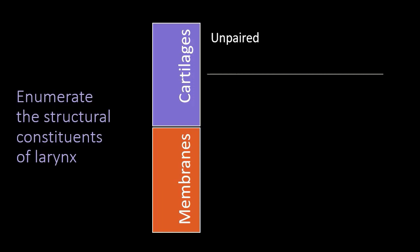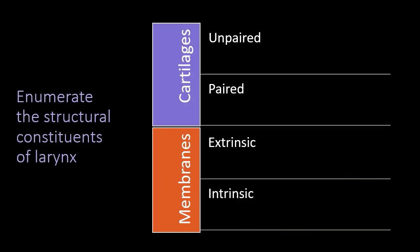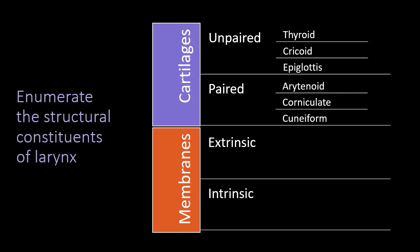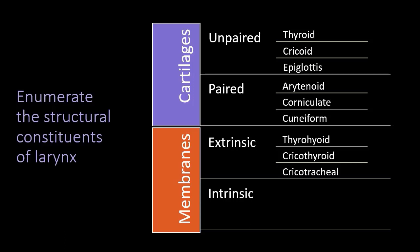Cartilages are of two types — unpaired and paired. Membranes are of two types — extrinsic and intrinsic. Among cartilages, the unpaired variety are thyroid, cricoid, and epiglottis — these are the bigger cartilages. The paired cartilages are arytenoid, corniculate, and cuneiform. Among membranes, extrinsic membranes are thyrohyoid, cricothyroid, and cricotracheal. Intrinsic membranes are two: quadrate membrane and conus elasticus.